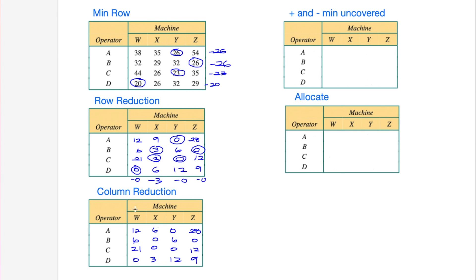Now we try to cover all the zeros with the minimum number of lines. Wherever you see two or more zeros in a row or column, that generally indicates where to place a line. We can see a couple of zeros going horizontally, two in one column, and we cover them with lines - rows or columns, it doesn't matter. When you can cover all the zeros with a number of lines equal to the number of allocations you need to make, you can already allocate, so we may not need the next step.